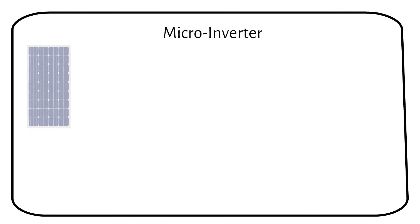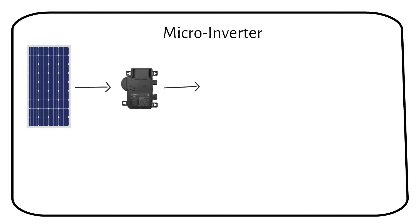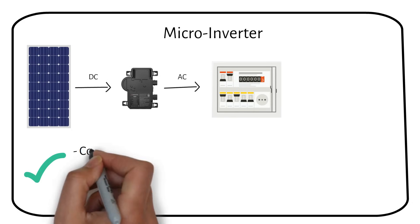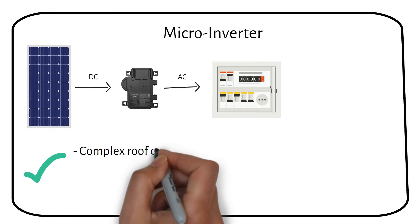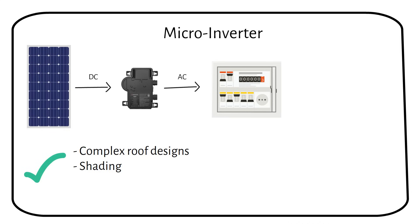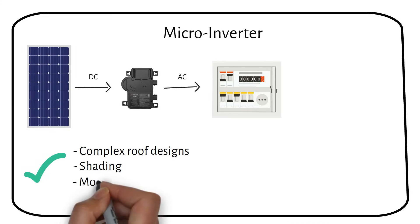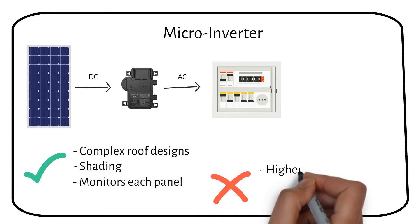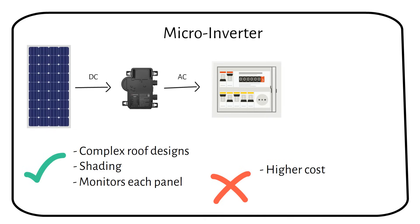A micro inverter is a small device installed behind each solar panel that converts the direct current produced by the solar panel into alternating current that can be used in your home. These devices are used in residential settings, especially in homes with complex roof designs or areas affected by shading. With micro inverters, only the performance of the shaded panel decreases without impacting the entire system output. Additionally, they offer the advantage of monitoring each panel individually, providing detailed insights into the performance of your solar installation. Micro inverters do come with a higher price tag compared to traditional string inverters.